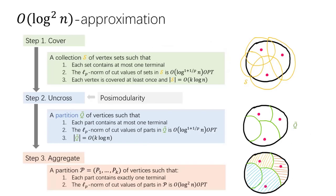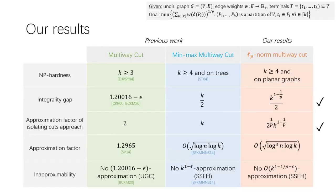Uncrossing used posimodularity, aggregation was analyzed via Jensen's inequality. The non-trivial part is the cover step. To compute the cover, we needed a bicriteria approximation to a problem called unbalanced terminal cut. This bicriteria result was given by Oncell et al., and we use it with a multiplicative weights update to get the cover step.